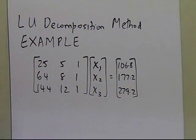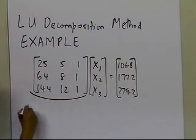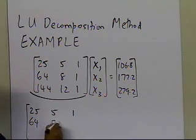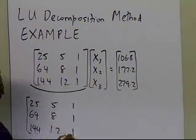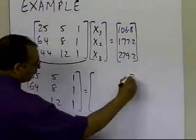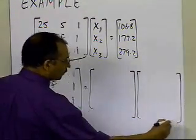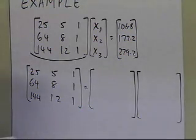The first step in the LU decomposition method is to decompose the coefficient matrix into L times U. I'm going to write down what the L times U of this matrix is — 25, 5, 1; 64, 8, 1; 144, 12, and 1. This decomposition is shown in a separate segment, covering how you decompose an N by N matrix into L times U.